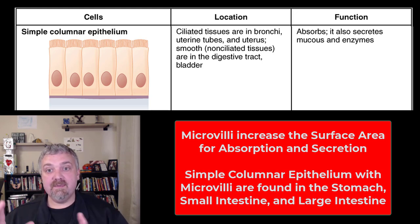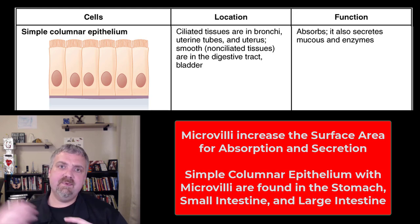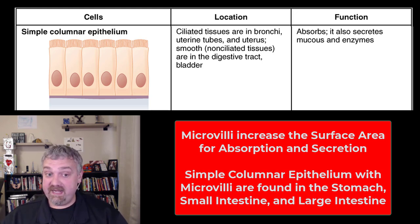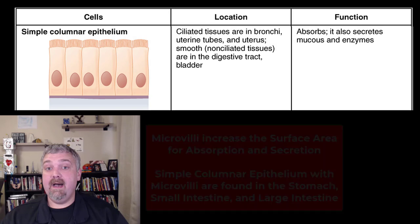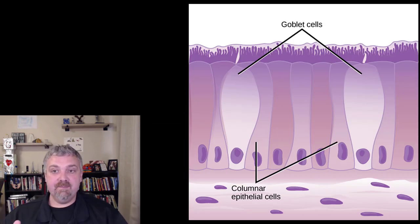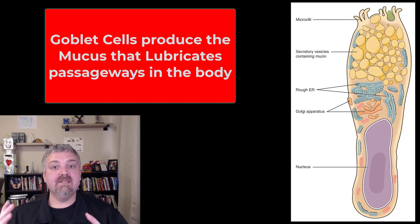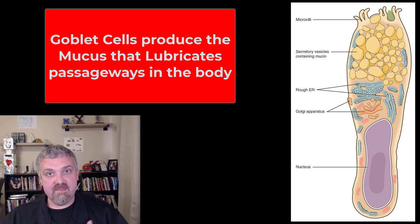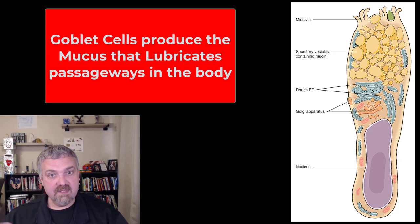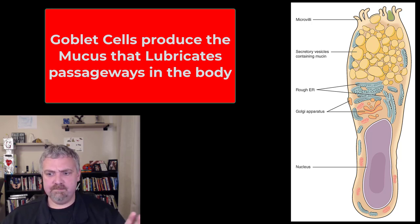Those are going to be simple columnar epithelium, and I'm much more concerned about you knowing the GI tract examples than the reproductive tract examples, because that's kind of confusing. Here we see another picture of simple columnar epithelium, and you're also going to see goblet cells. Goblet cells are the cells that make mucus — a lot of your tracts need to be constantly lubricated, and one way we do so is with these gland-like cells called goblet cells that produce mucus.